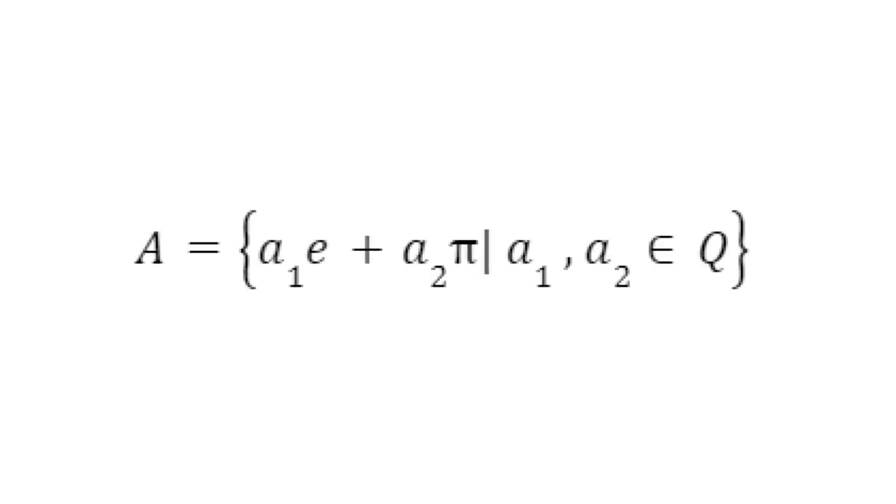Let's look at the subset of real numbers defined as so. So A is the subset of all linear combinations of pi and e with rational coefficients.